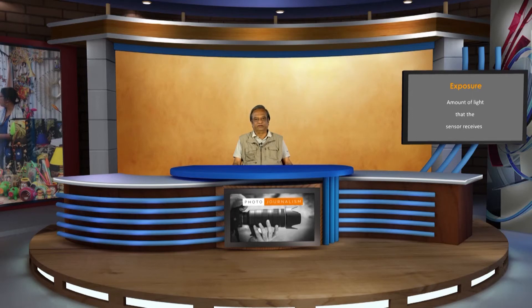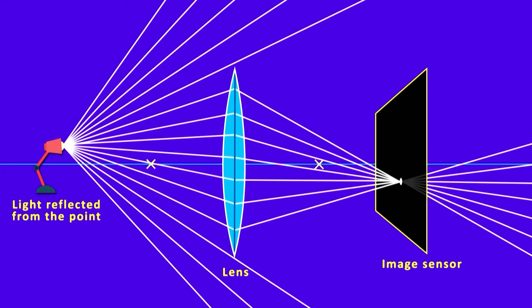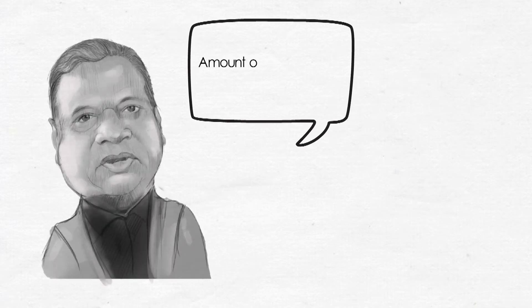Exposure is the amount of light that falls on the sensor. Now we have a diagram where you see the source of light entering the lens and then entering the sensor. Light which is reflected off from a subject—you do not shoot light directly—what you shoot is light which is reflected off from a subject. So there is a subject over there, light is reflected off from a subject, it enters the lens, and from the lens it goes on to the sensor. So the amount of light that falls on the sensor is your exposure. Earlier it was a film. Nowadays it is a sensor. You expose the sensor to light.